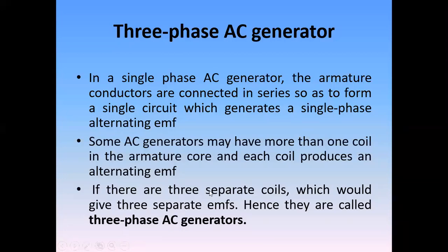So what is a three-phase AC generator? A three-phase AC generator consists of three armature coils, and the three coils are producing three different EMFs. So we call it a three-phase generator.